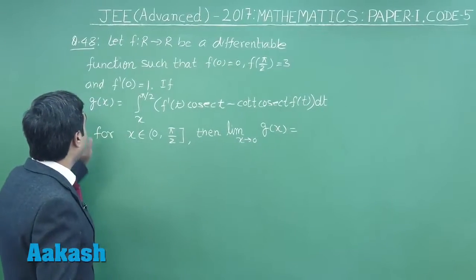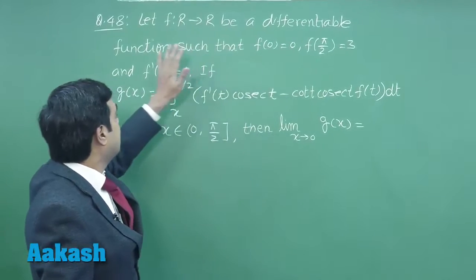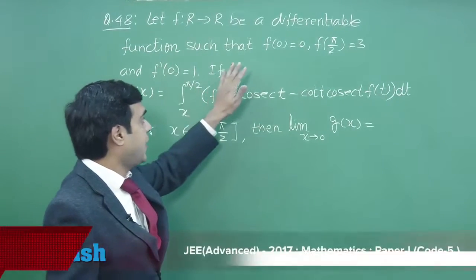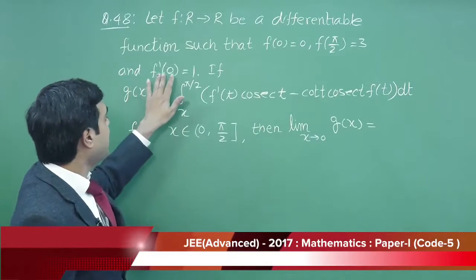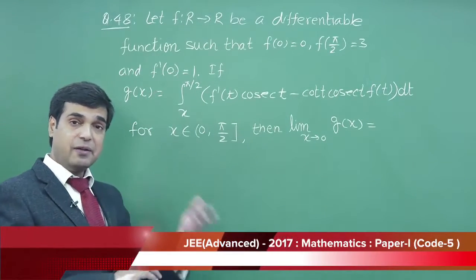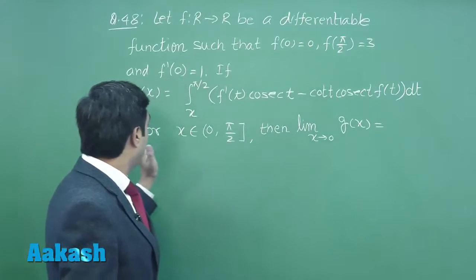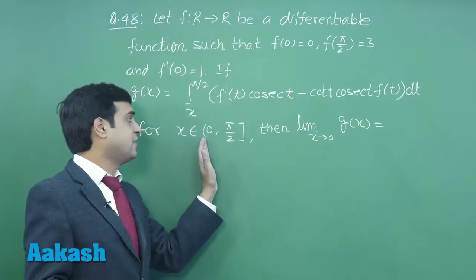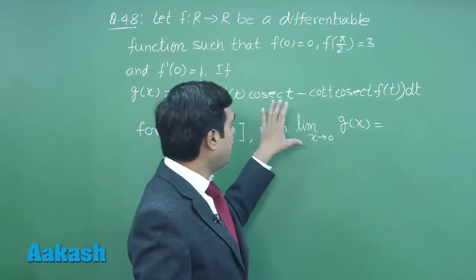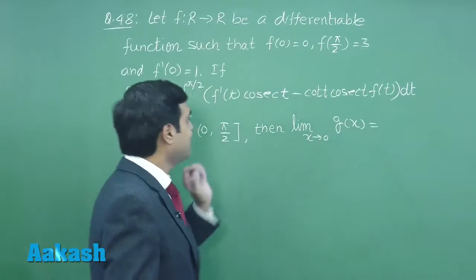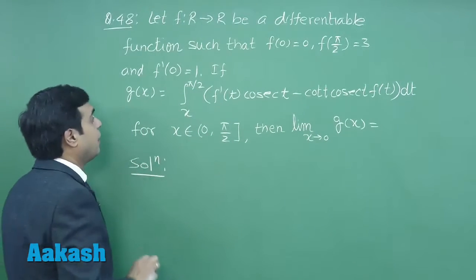Moving ahead to question number 48: Let f: R→R be a differentiable function such that f(0)=0, f(π/2)=3, and f'(0)=1. Another function g(x) is given as g(x) equals integral of this term for x∈(0,π/2]. Then find the value for lim(x→0) g(x). Let us start this question.